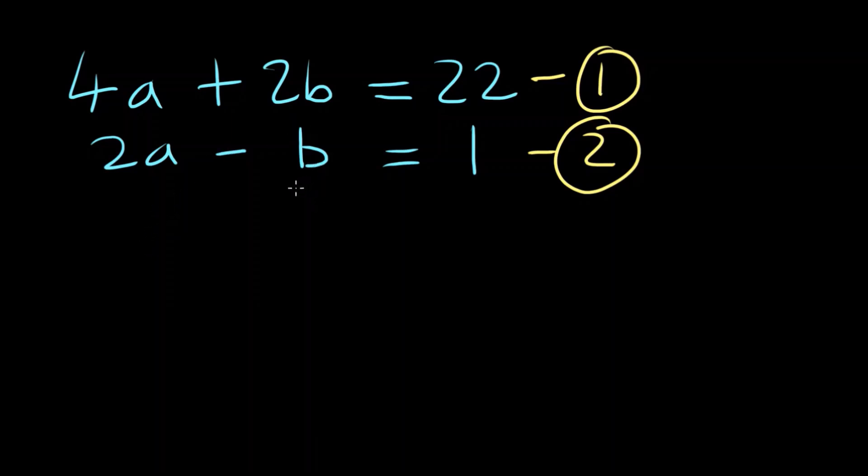So looking at these two, I think this would be the easiest to get. So we've got 2a minus b equals 1. So if we rearrange that, we'd get 2a equals 1 plus b. And to get b by itself, that would just be b equals 2a minus 1. And we can go ahead and label that equation 3.